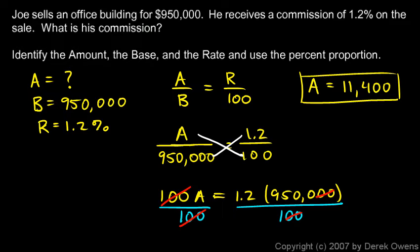Now I'm going to show you another way to solve this problem that you might like better. We can translate the problem directly from English into a mathematical equation. This idea of translating from English into math is a pretty powerful concept and something you want to master in algebra. Think about what we're trying to find: his commission. He is going to receive 1.2 percent of the total.